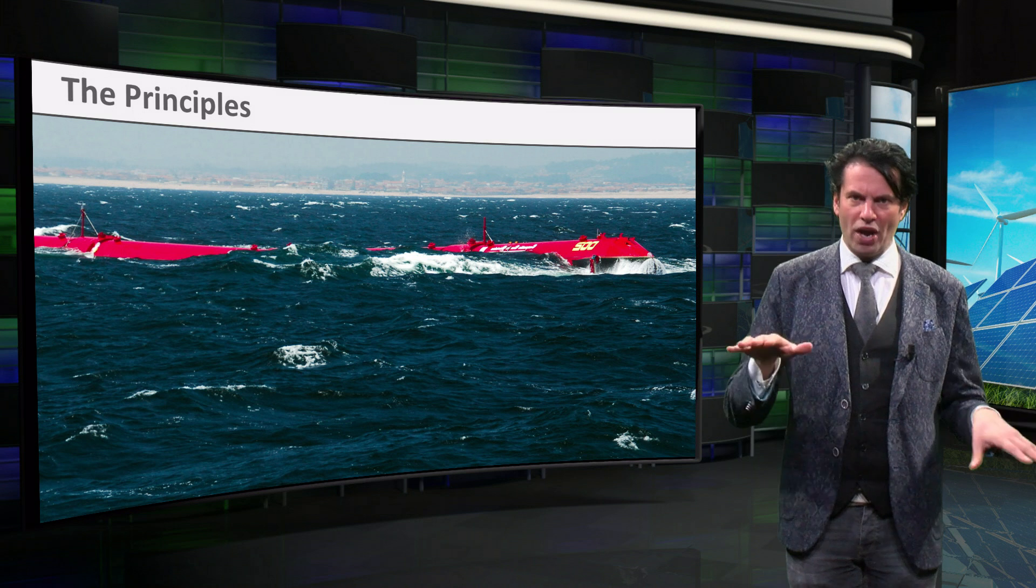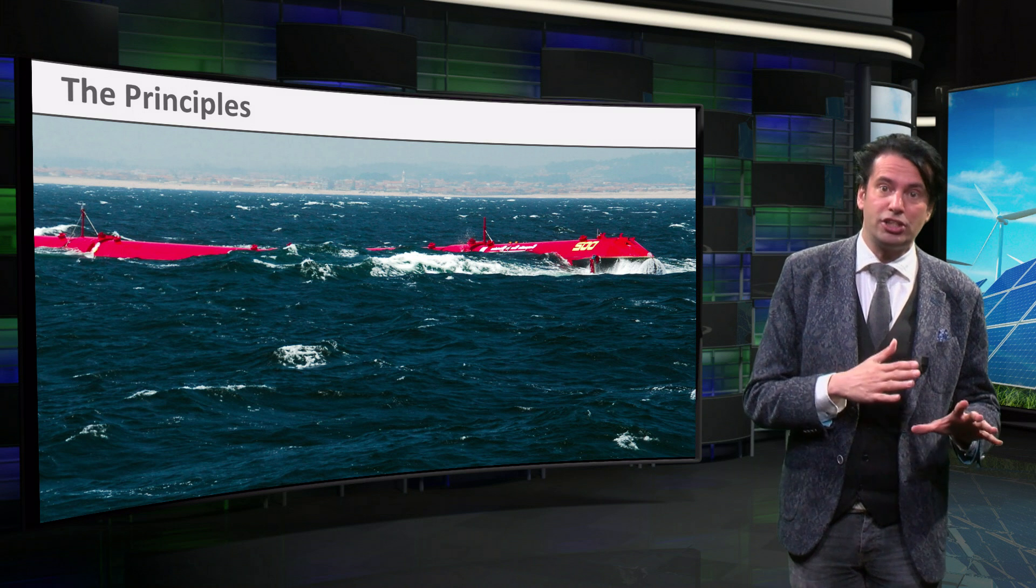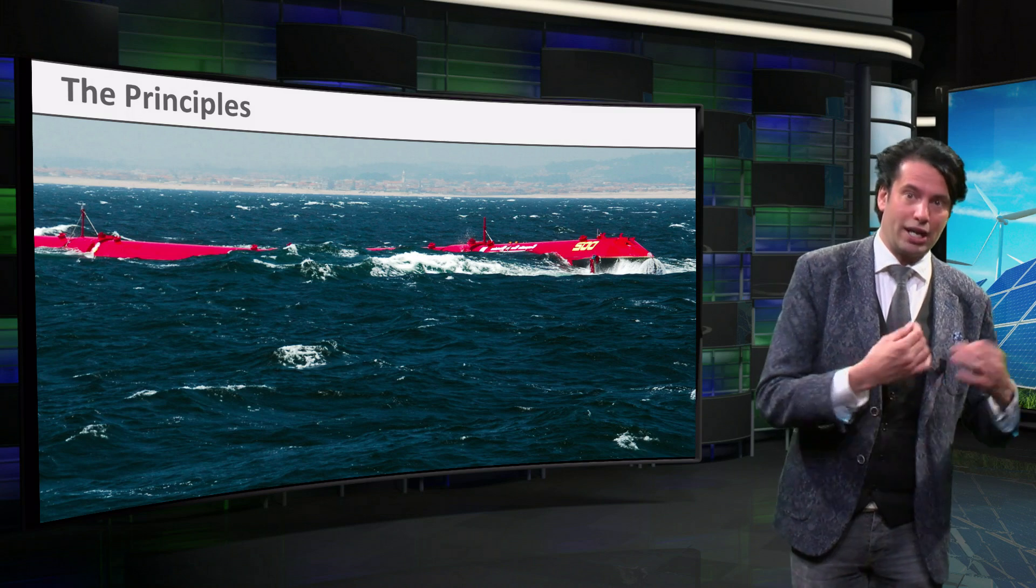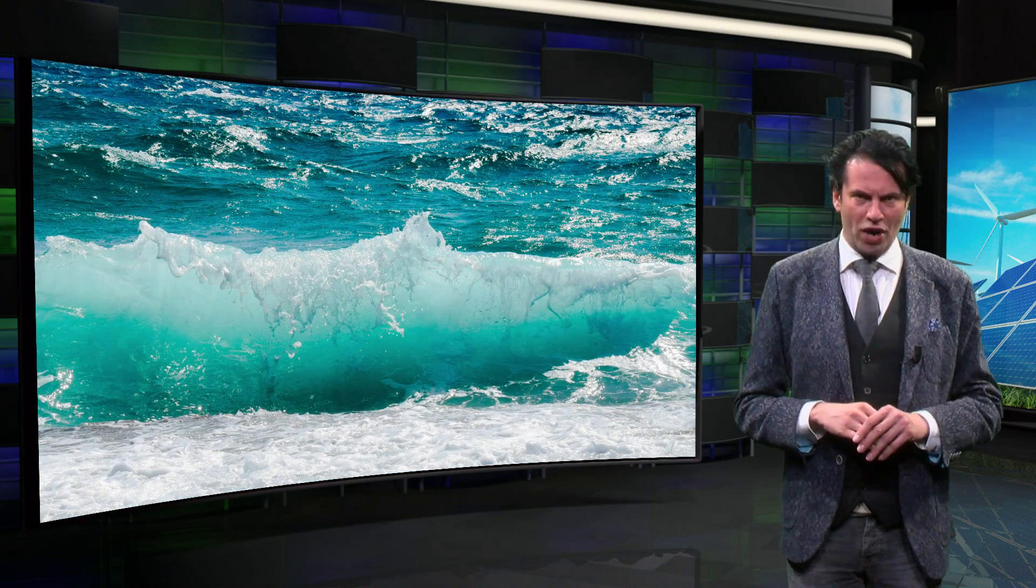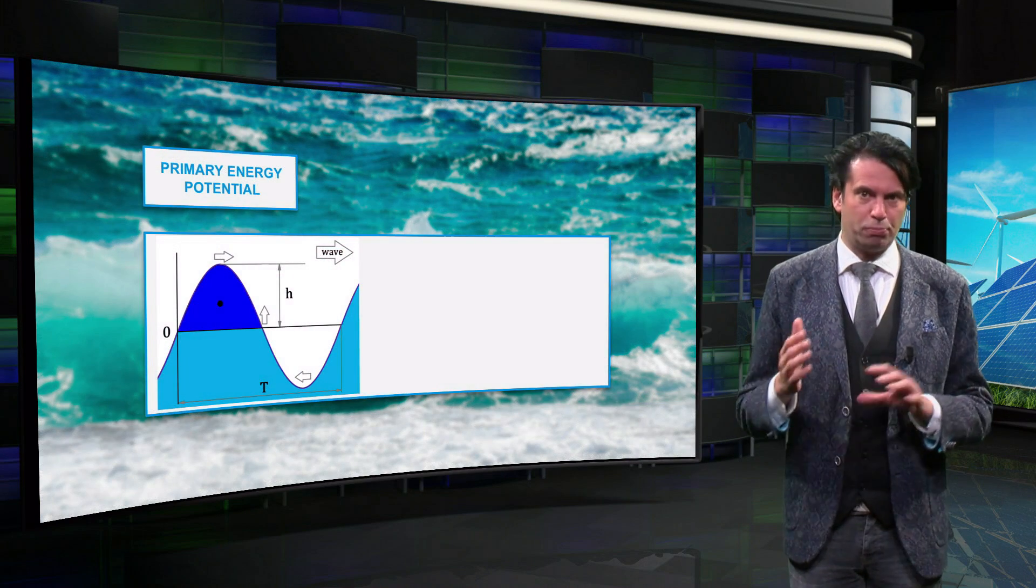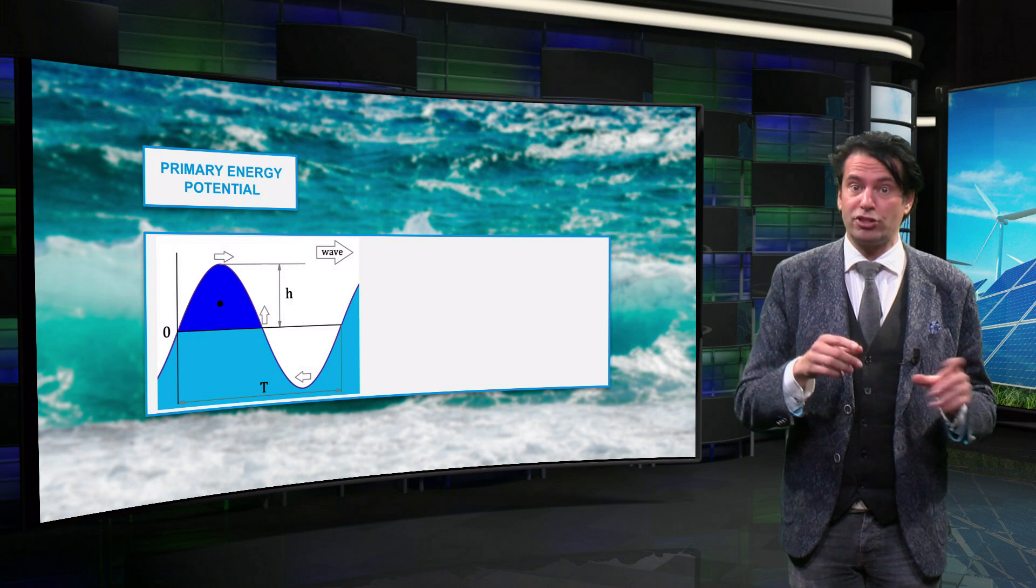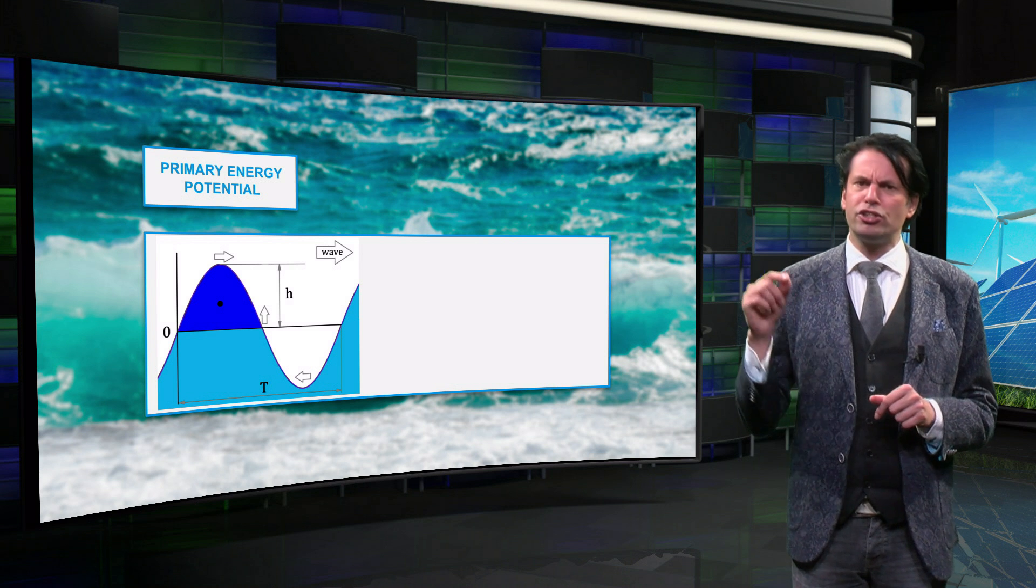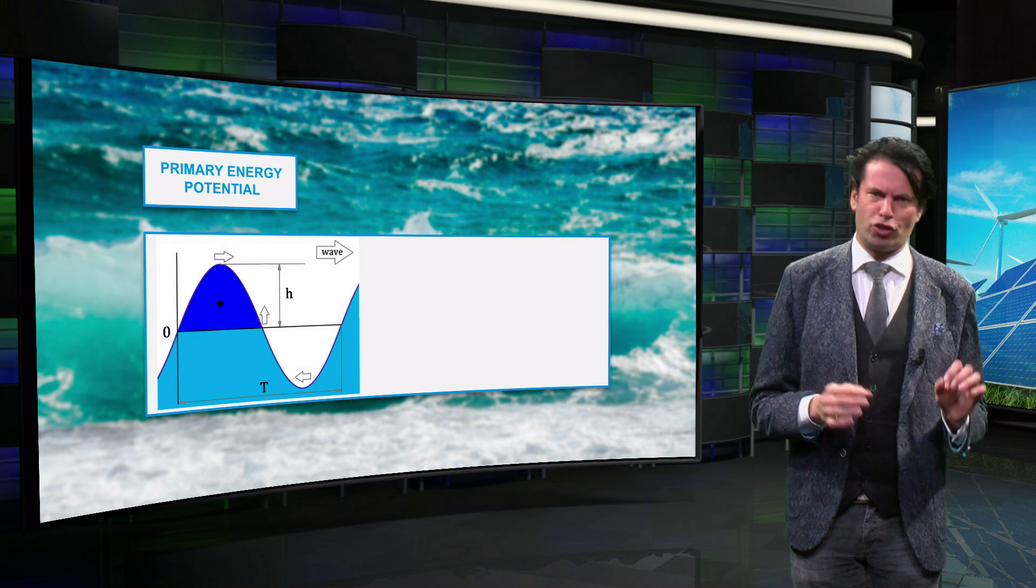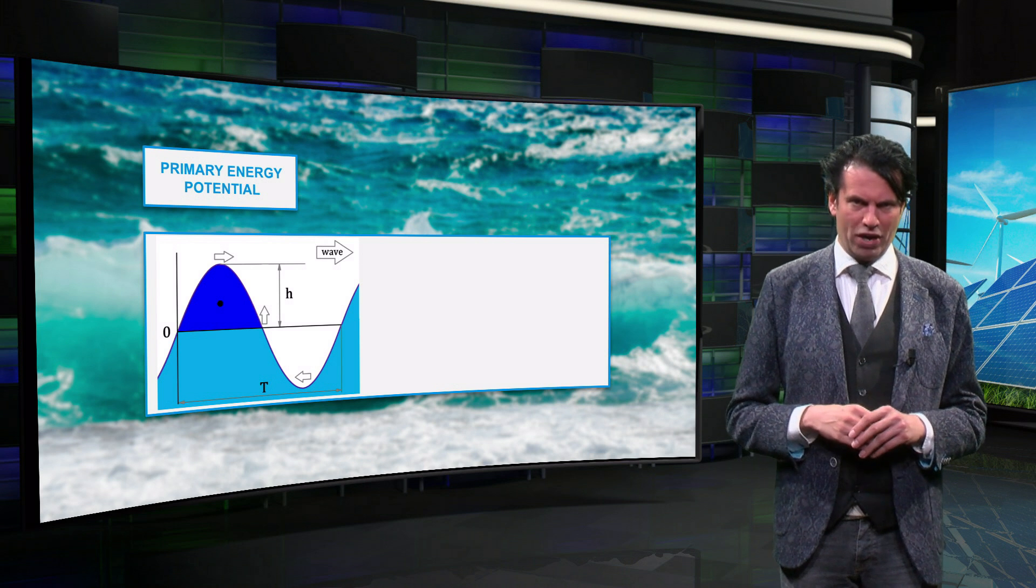An example of a surface attenuator is the Pelamis wave energy converter. By floating on the waves, this machine converts the energy in the wave into mechanical energy, and subsequently into electrical energy. We will use the potential energy of the wave to derive the primary energy potential. If we consider this image, where the wave has been simplified as a sinusoidal waveform, here the zero is the average surface level, h is the height difference, and λ is the wavelength.